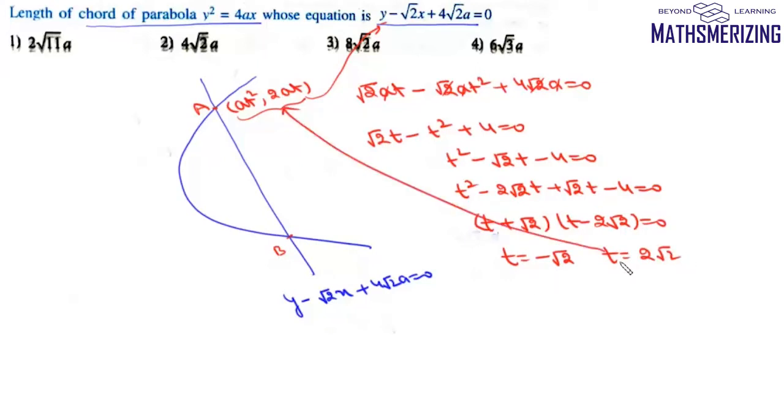Now we have t₁ and t₂. The length of chord is a|t₂ - t₁|√((t₁ + t₂)² + 4). So this length will be a(3√2)√((t₁ + t₂)² + 4).